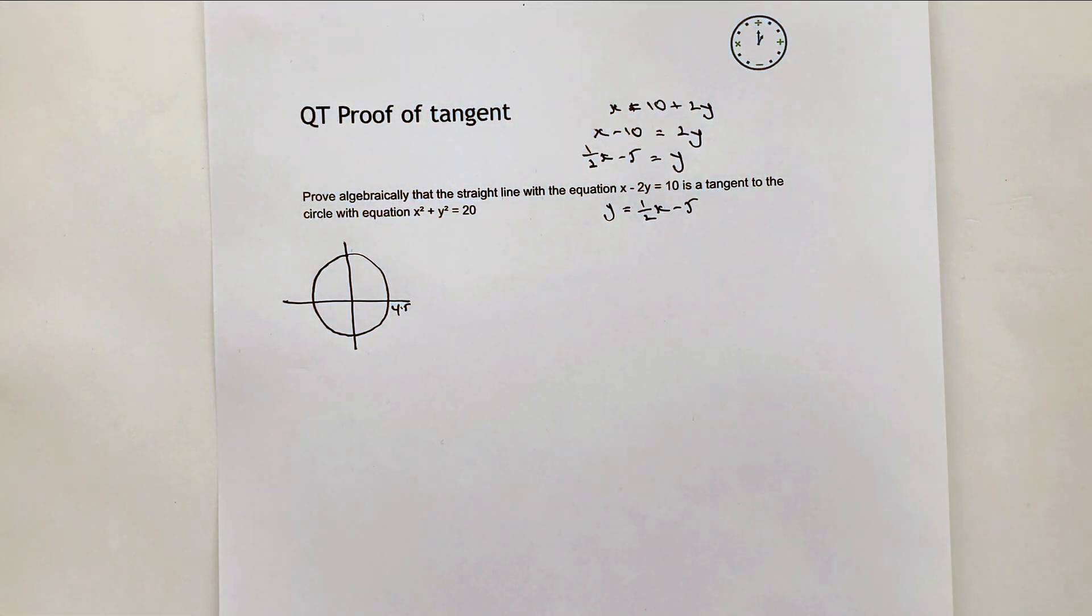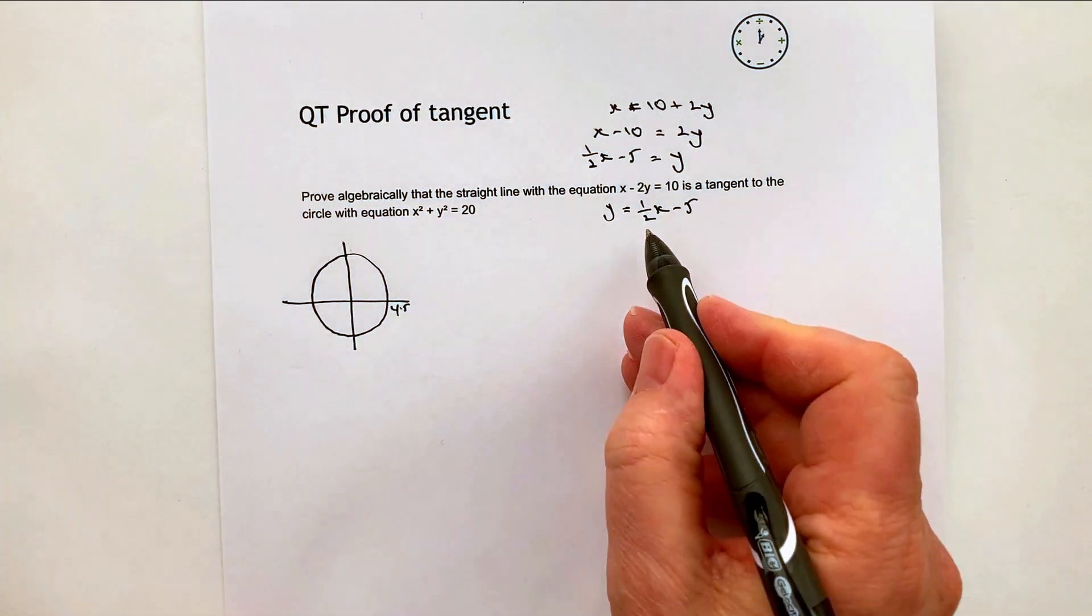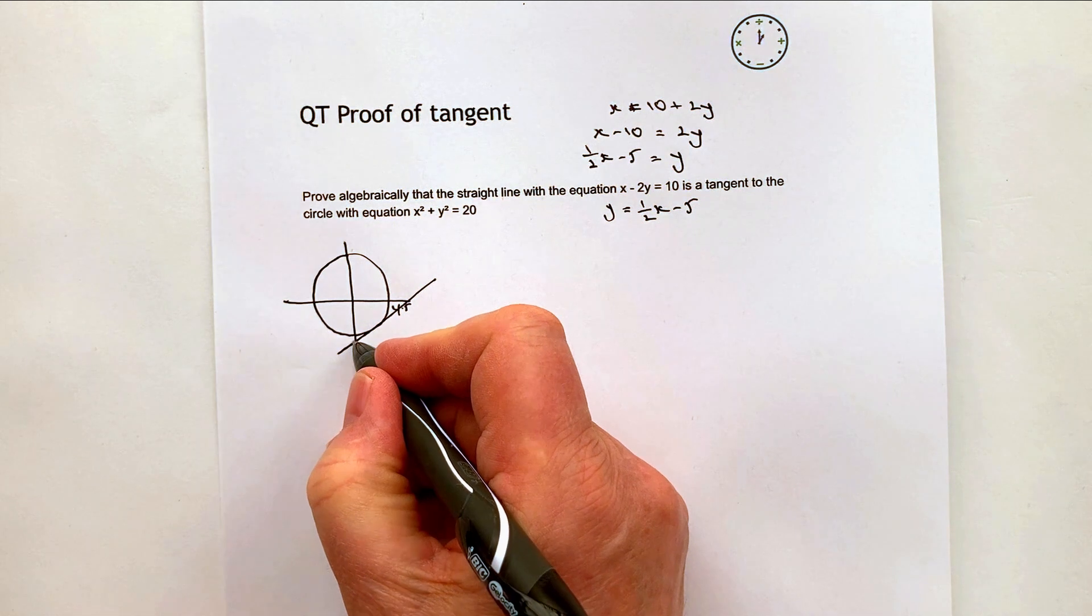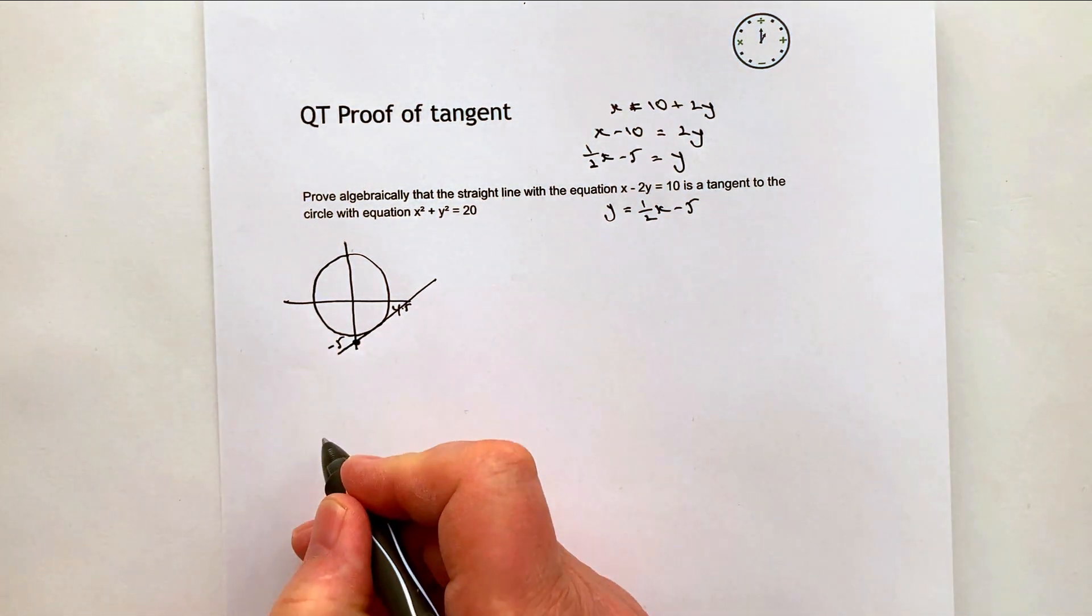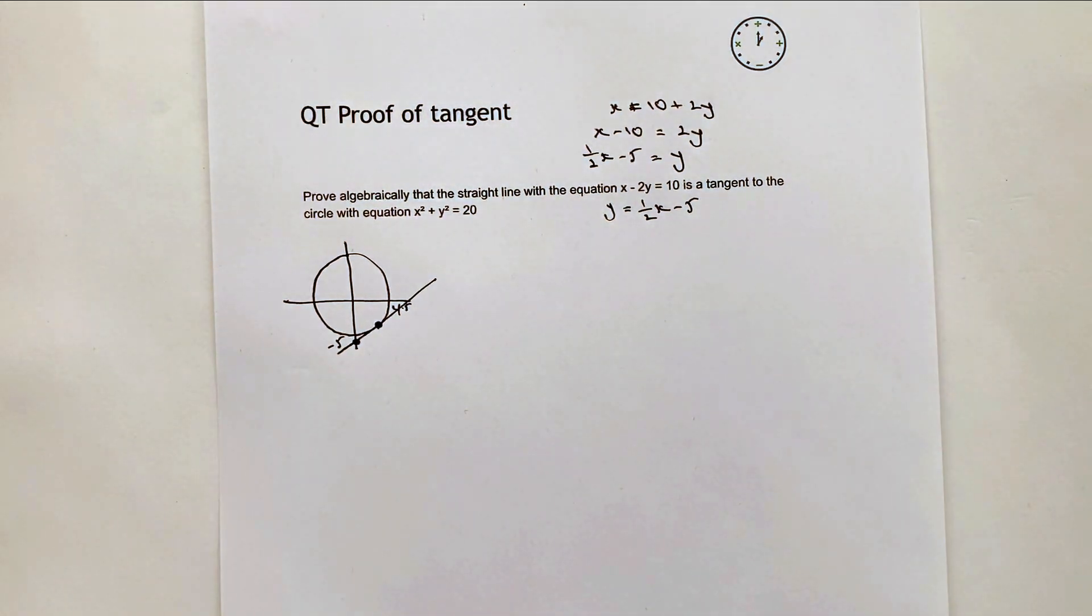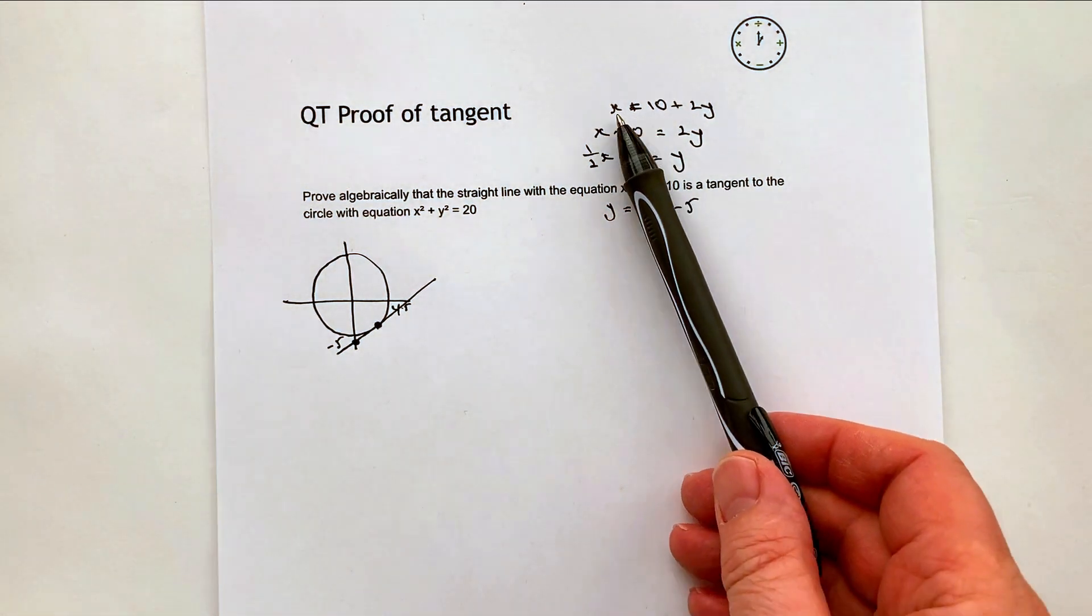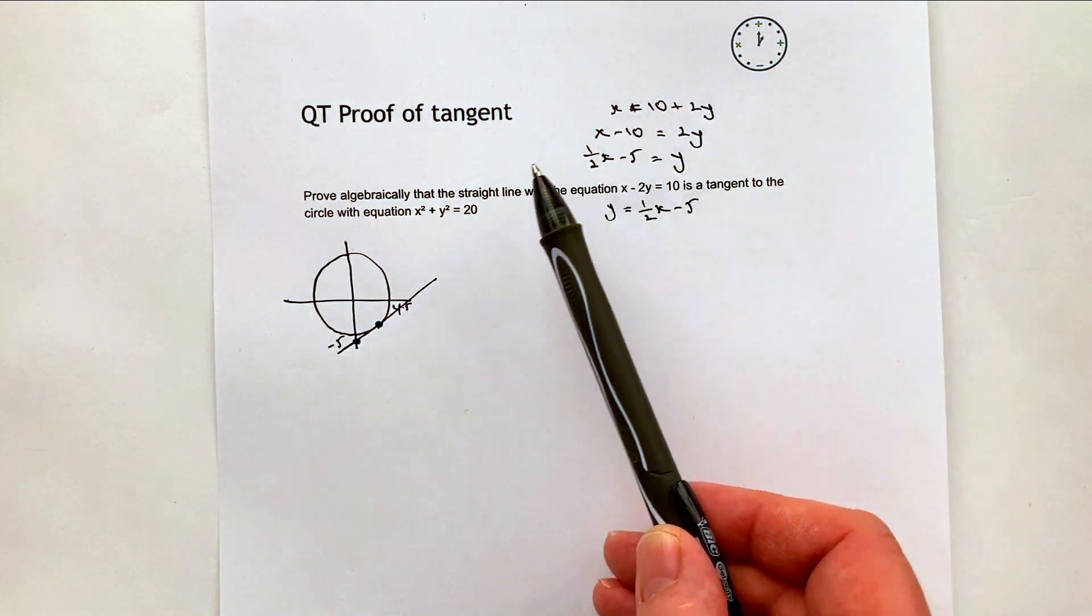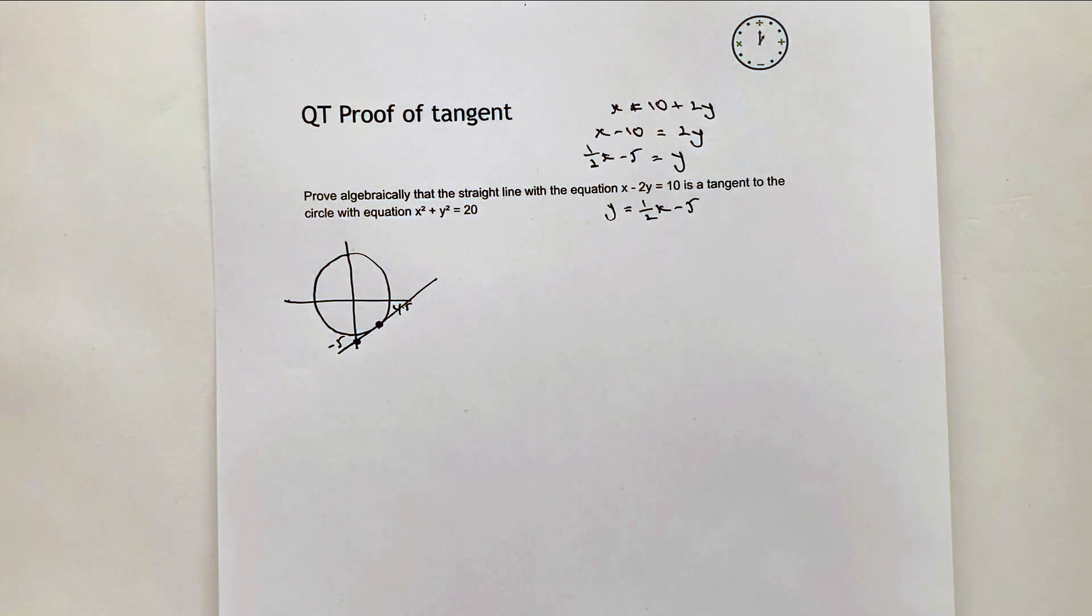So what's going on in our sketch is that this is a gradient of roughly about a half, going through the y-intercept at minus 5, and it touches the circle at that particular point. That's the point we're going to try to find using substitution. We've got a value of x. We've said that x equals 10 plus 2y. So we can plug this directly into our equation.